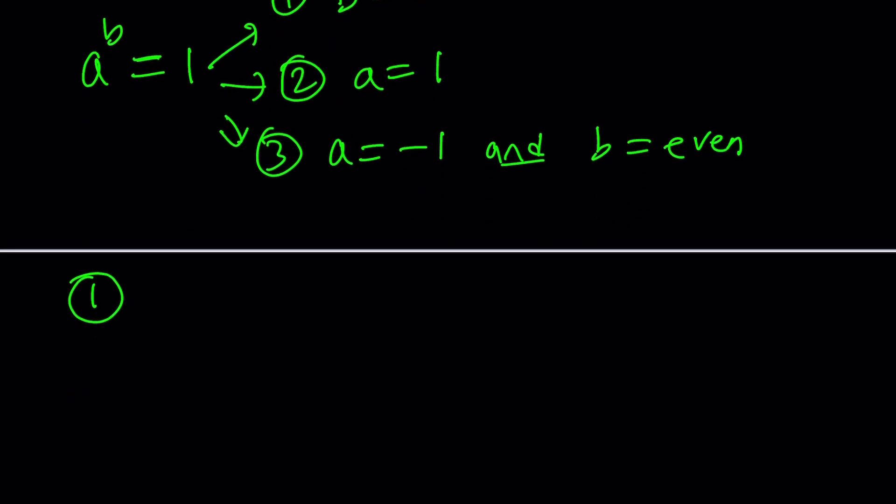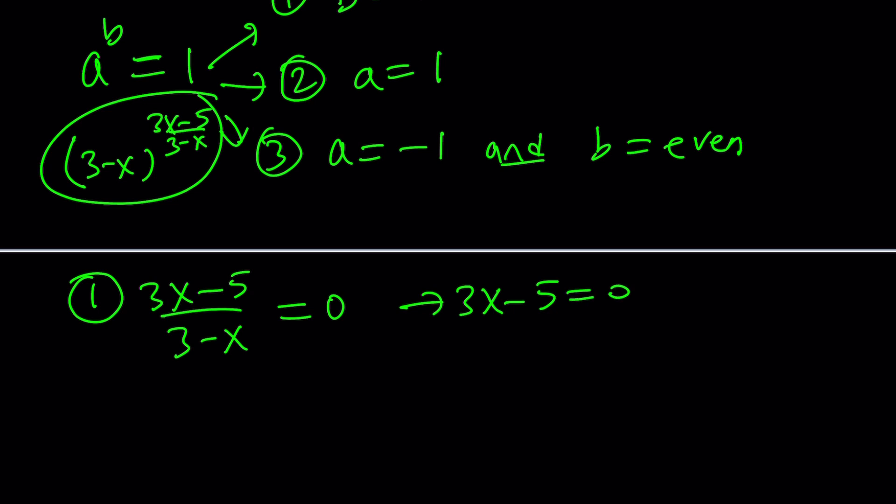Now, if b is equal to 0, let me copy the equation here so you can see what a and b are. Okay, this is my expression. And in this case, b is the exponent. So we want 3x minus 5 divided by 3 minus x to be 0. What does this mean? This means that 3x minus 5 should be 0. And of course, 3 minus x should not be 0.